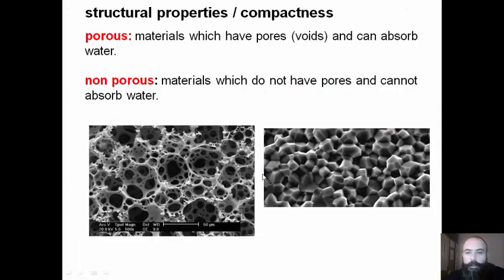The compactness of building products is related to whether they are porous or non-porous materials. In porous materials, there are pores and voids, and they can absorb water. Non-porous materials don't have pores, so they cannot absorb water.